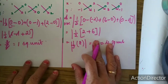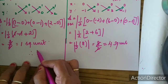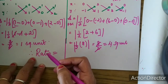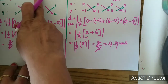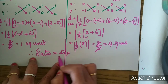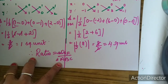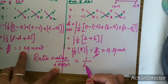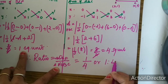Now can you find the ratio of both? Therefore, ratio of triangle DEF to triangle ABC is equal to 1 upon 4, or 1 is to 4.